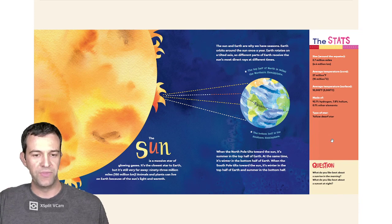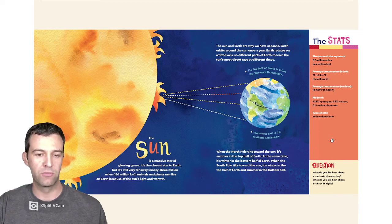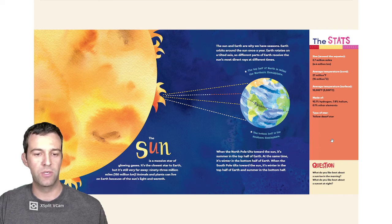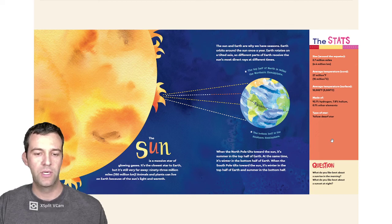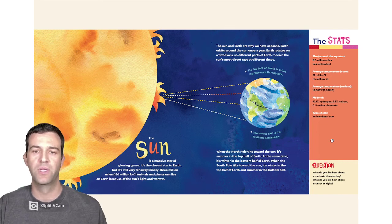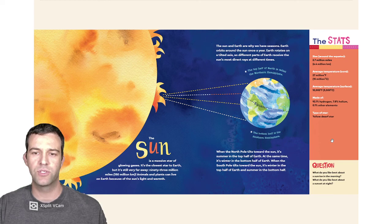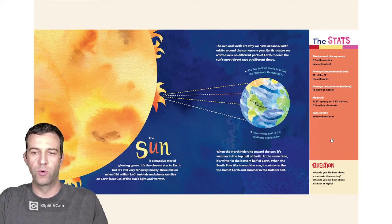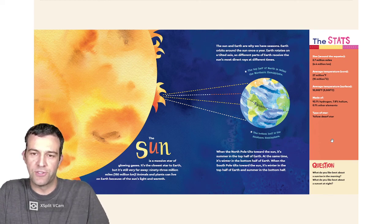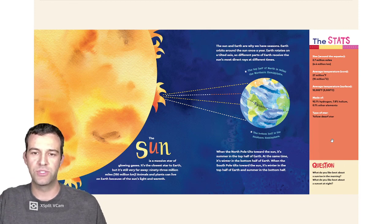The Sun is a massive star of glowing gases. It's the closest star to Earth, but it's still very far away, 93 million miles. Animals and plants can live on Earth because of the Sun's light and warmth. The Sun and Earth are why we have seasons. Earth orbits around the Sun once a year. Earth rotates on a tilted axis, so different parts of Earth receive the Sun's most direct rays at different times.